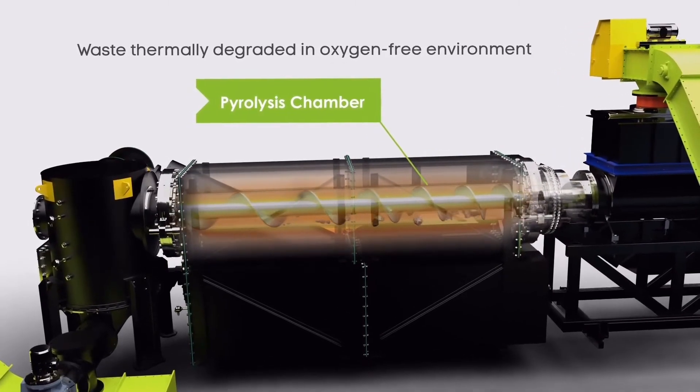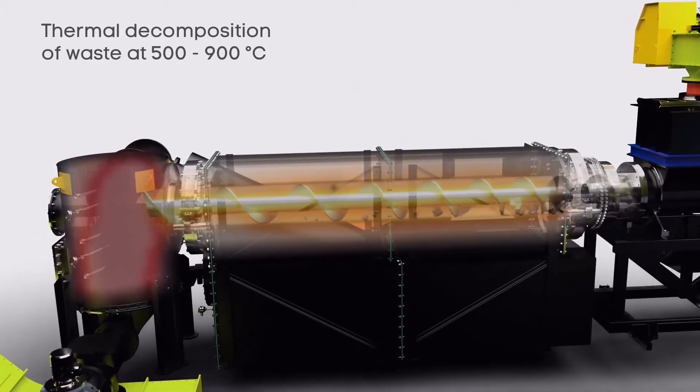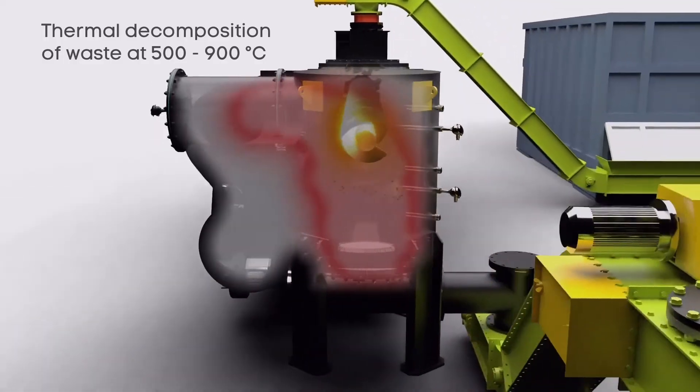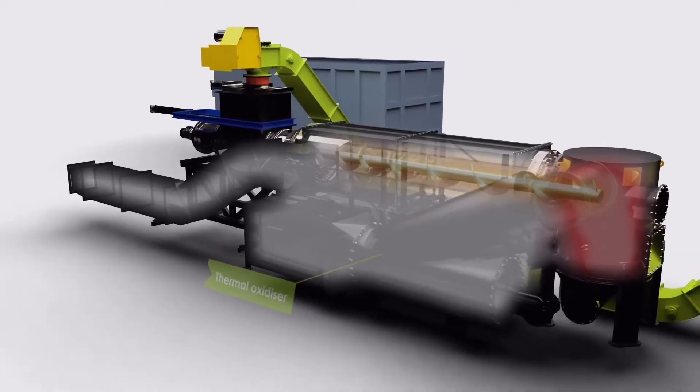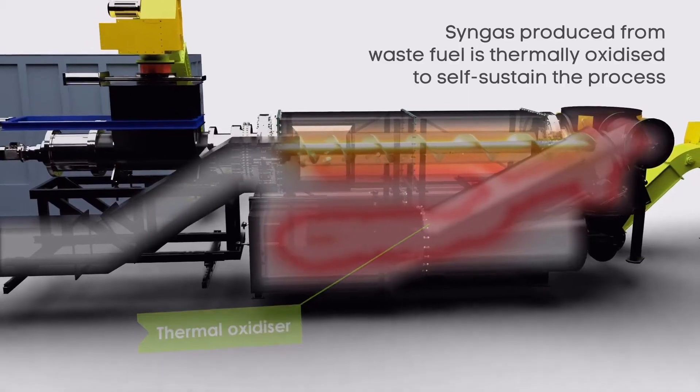The pyrolysis chamber rotates, pushing the waste through and along its length, whilst indirect heat is applied from high temperatures generated in the latter part of the process. This section occurs in the absence of oxygen, resulting in lower emissions and a much more flexible system.